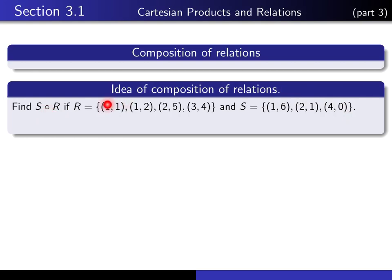Well, we start with this entry here, this (1,1). So that tells us that R relates 1 to 1. And we follow this 1 here and we see that S relates that 1 to 6. And so we want (1,6) to be an element of R composed with S.